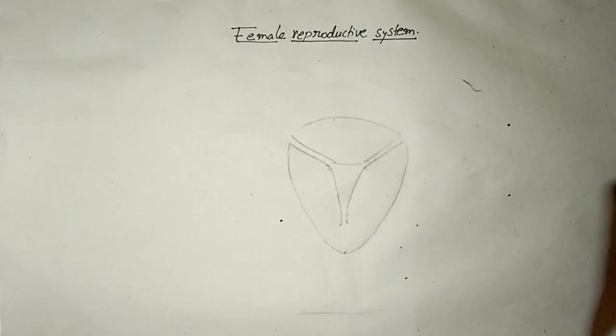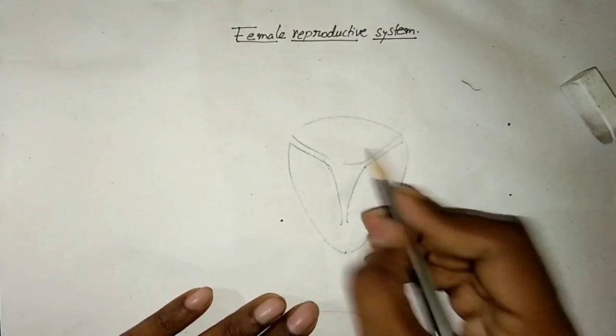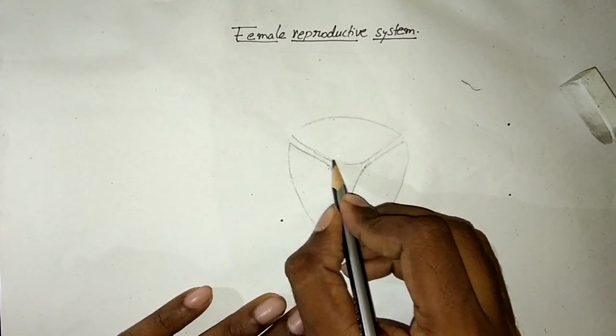So these two spaces are going to fuse with the fallopian tubes on either side of the uterus.